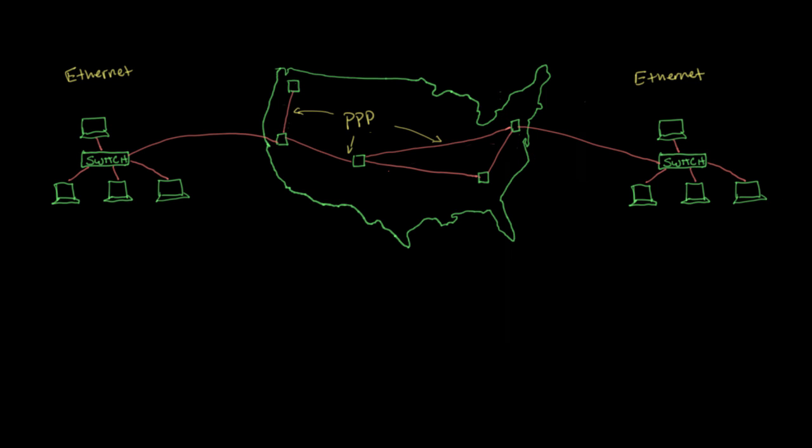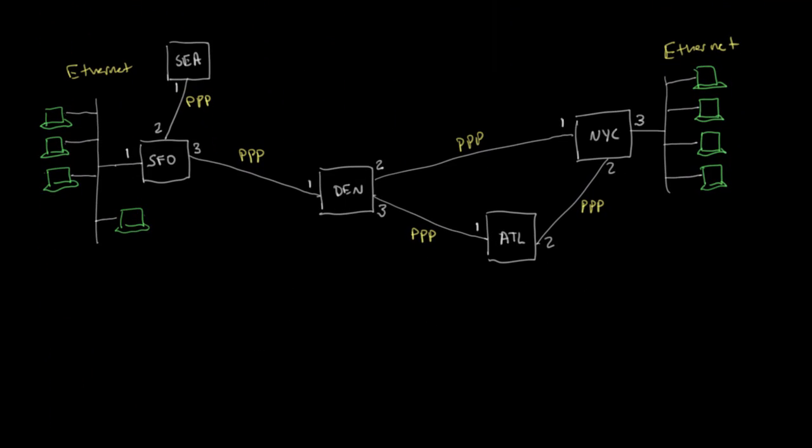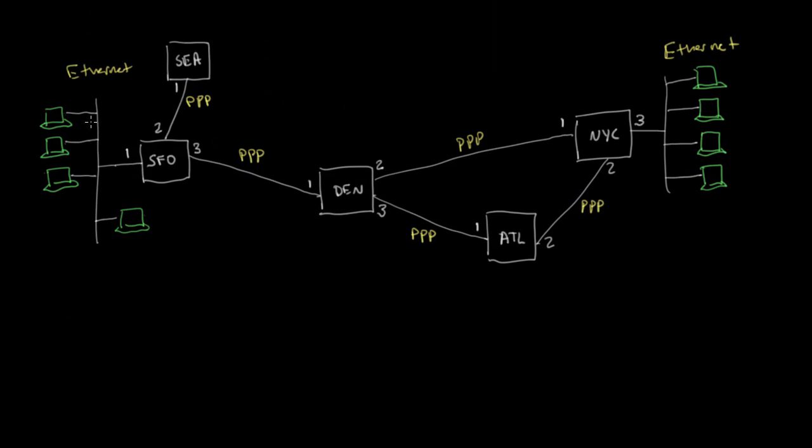So to help us explore this a little bit more, I've redrawn this scenario down here in a little bit more detail. We've got our Ethernet network over here on the left, and this is a multipoint link. So I've shown all the computers connected to this vertical line just to show that any of them can send frames to any of the other ones that are connected to this network.